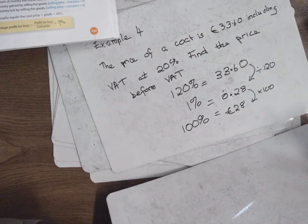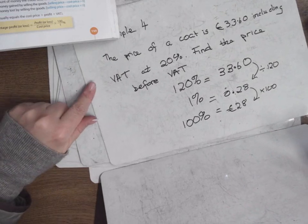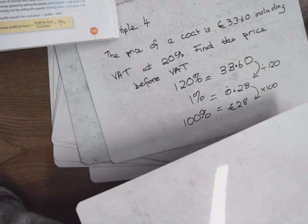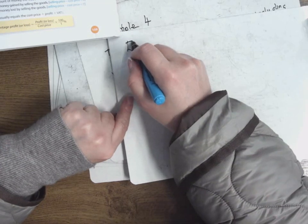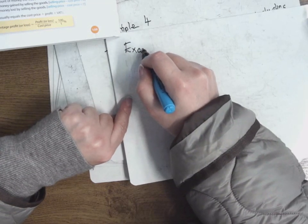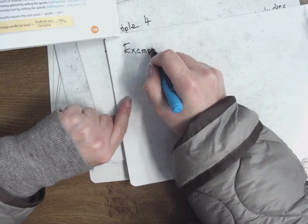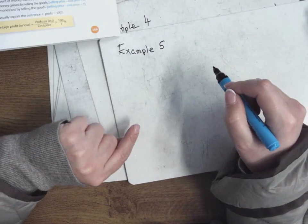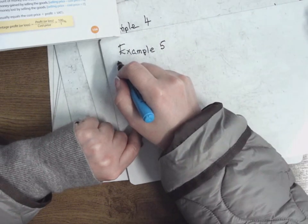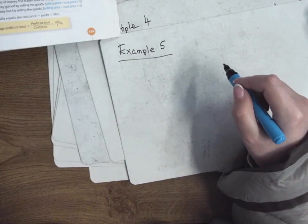So you divide by 120, multiply by 100. Got it? I'll do a second example. So is that down? Are we good? Example 5.